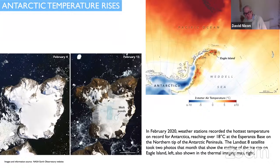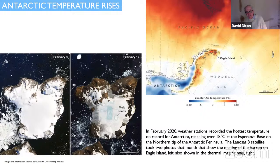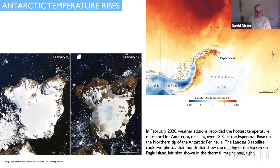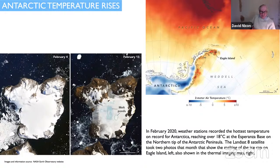Antarctic temperature rises have been going on for a while now. In February 2020, weather stations recorded the hottest temperature on record for Antarctica, reaching over 18 degrees at a base on the northern tip of the Antarctic Peninsula. A satellite took two photos that month that showed the melting of the ice cap on Eagle Island. You can see the meltwater ponds in the photograph on the right.